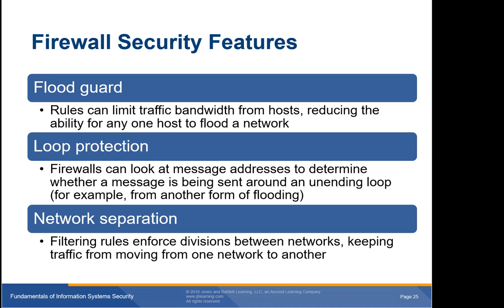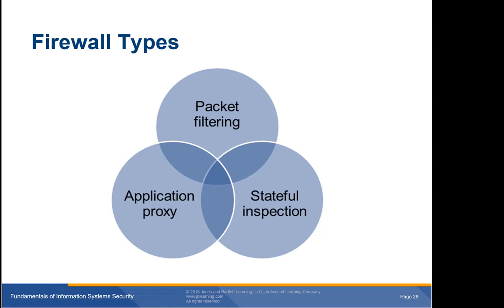Firewalls can also provide flood guard rules to limit traffic bandwidth from hosts, loop protection to identify messages being sent in an unending loop, and network separation to keep traffic from moving from one network to another. The basic function of a firewall is to block any traffic you don't explicitly allow. Each time the firewall receives a network message, it checks the message against its rules and either allows or blocks it.